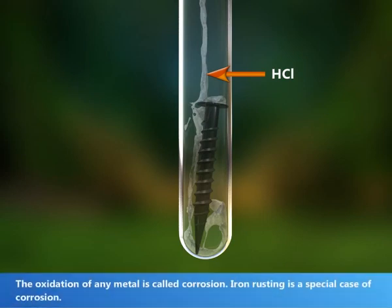The oxidation of any metal is called corrosion. Iron rusting is a special case of corrosion.